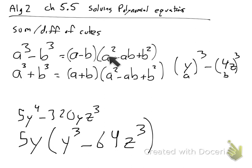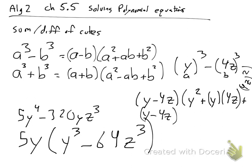I will plug it into this formula right here. So I get y minus 4z times y squared plus y times 4z plus, and I'm going to have to go sideways here, 4z squared. So when I go to clean this up, I'm going to get y minus 4z times y squared plus 4yz plus 16z squared. And you have now just factored that problem.